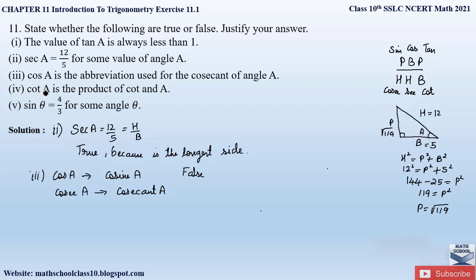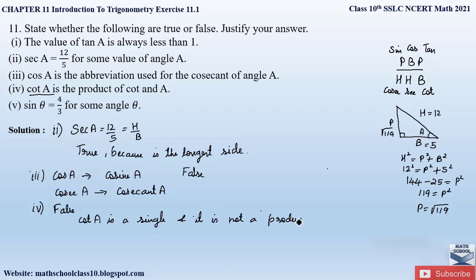The fourth part says: 'cot A is the product of cot and A.' This is again false, because cot A is a single term — it is not a product of cot and A. Here, cot is a trigonometric ratio and A is the angle, and together cot A is used as a single term.